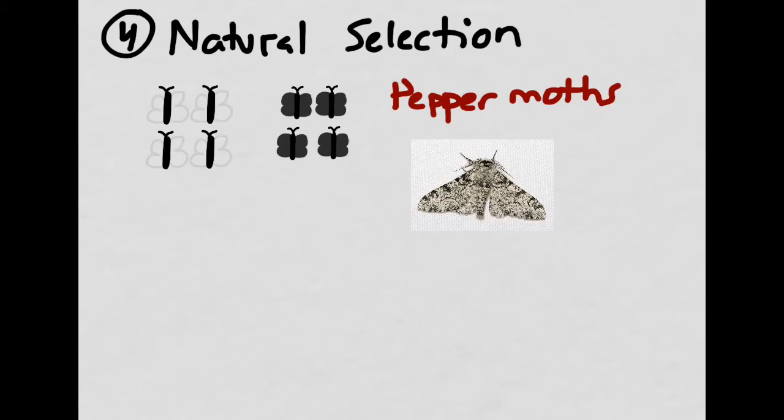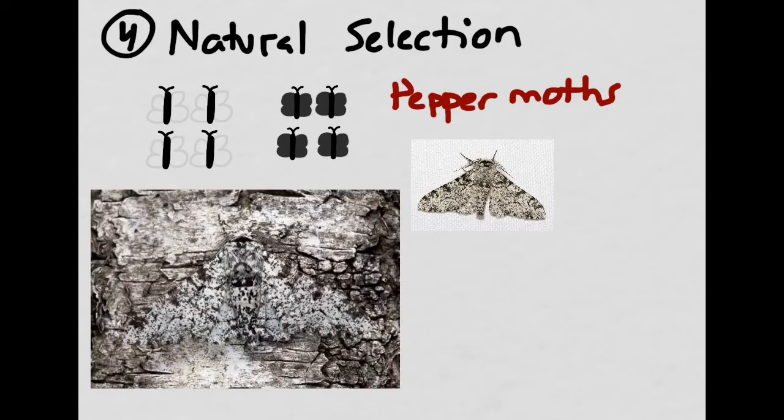It was sort of grayish-white in color. And one of the things that was great about having this moth be exactly this color is that it blended in with a certain kind of tree bark that was very common in London at the time. So here is the pepper moth against the bark of a tree. And I had to make it big so you could actually see it. But you can see that it's extremely difficult to see the pepper moth. And unless you knew it was there, it would be very difficult to see it, especially from far away.